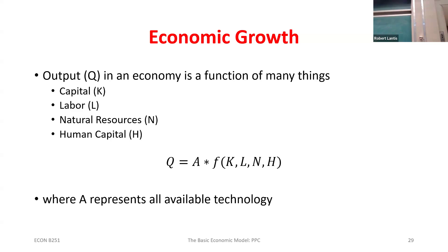For our purposes, think of capital as investment into anything that makes your production process more efficient — machinery, research and development, anything that isn't your workers or raw materials. Capital is generally what laborers use to take the raw materials and make the product. So capital, labor, and natural resources relate: capital is the tools workers use to convert natural resources into output.